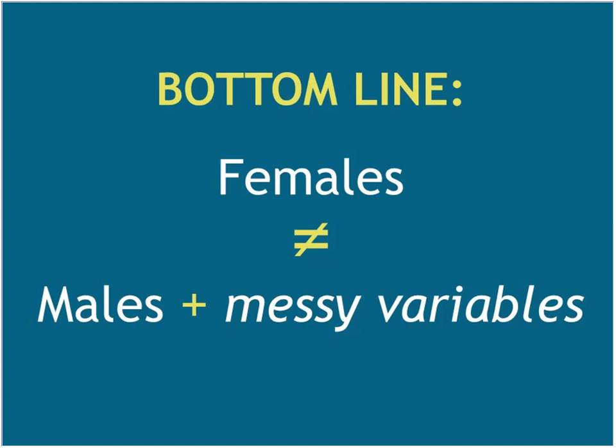I'm not suggesting you should do research exclusively in females — just that we need to do it in both, because it's actually not as much of a problem as we might think. The bottom line: females do not equal males plus messy variables. There's been an assumption that males are the standard and females are the deviation — just males plus messy variables we should avoid. But all those things considered 'messy variables' are a reality in females, and if you don't study them, you can't suggest your science is generalizable to females.